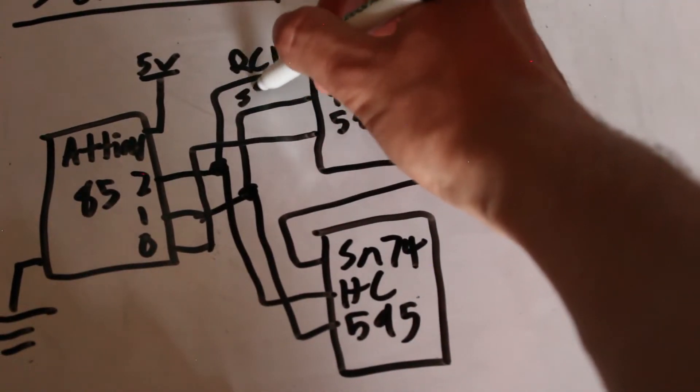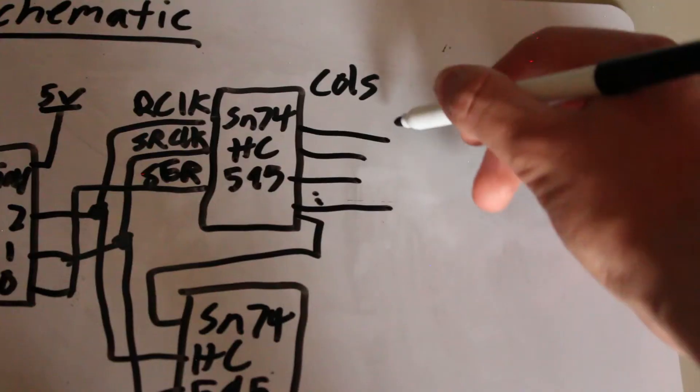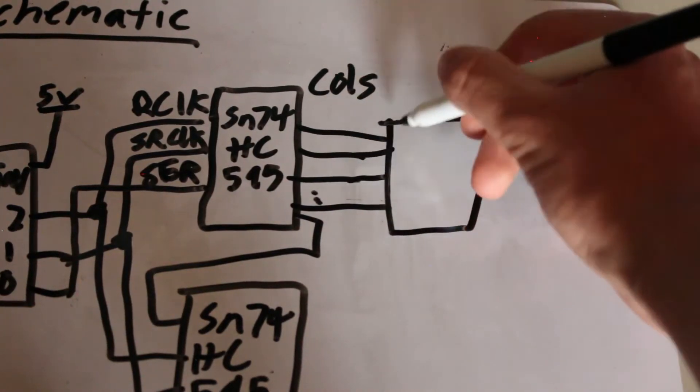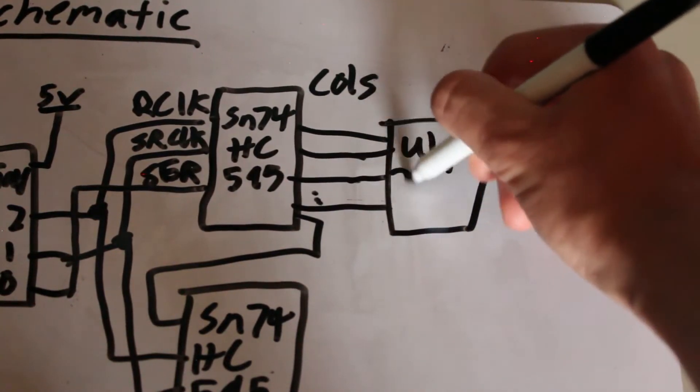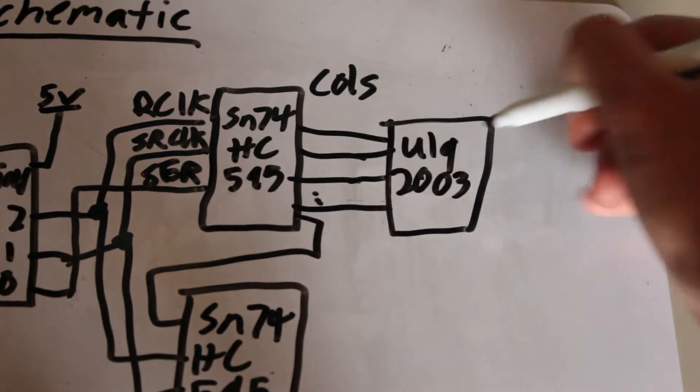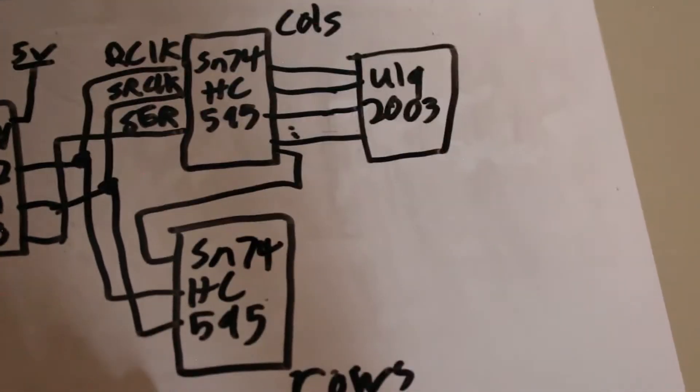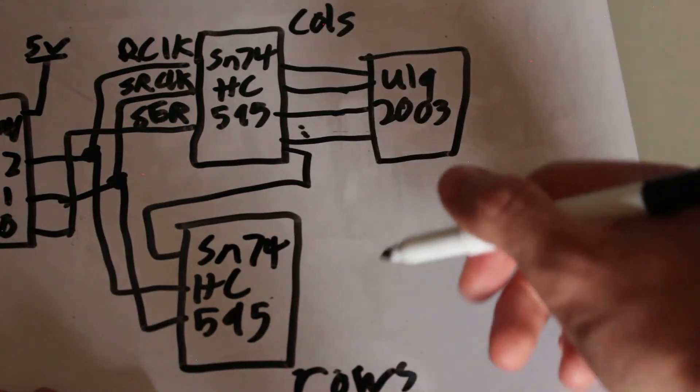In addition, I connected the outputs of the second shift register to this ULQ-2003A IC. This IC is a Darlington transistor array. The reason why I need this Darlington transistor array is because I will be sinking the current from each column